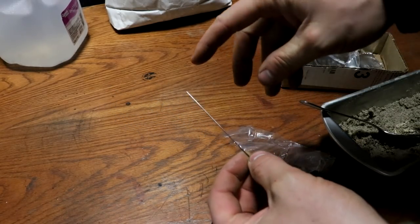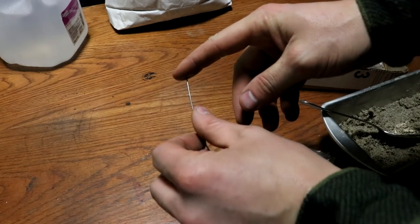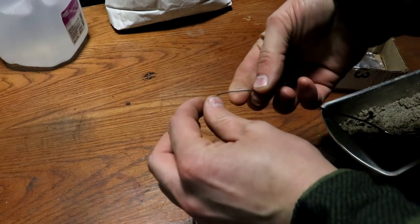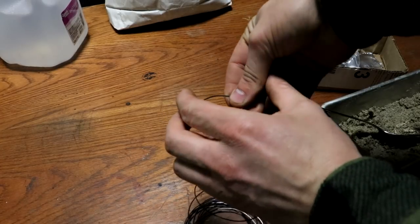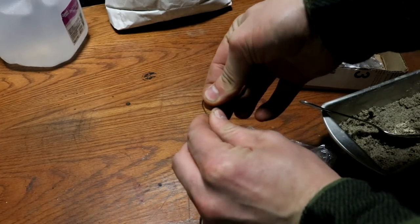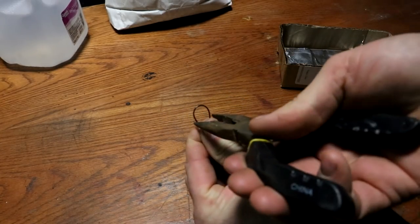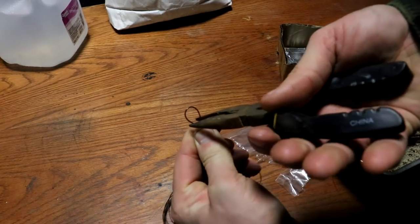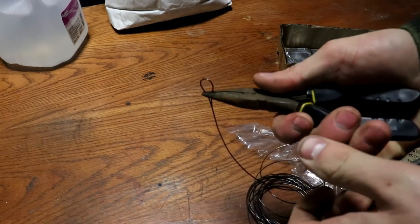But now what if I wanted it to form into a shape that's different than just straight? Well, what I can do is bend it. It's still warm so it's trying to resist being bent. And I just hold it in place.